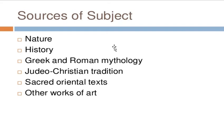For nature, the sources of art pieces may come from nature, from the impression. A good example is a painting of a mountain, the painting of Mount Makiling, a lake, or an ocean.